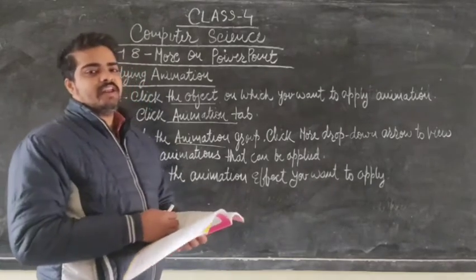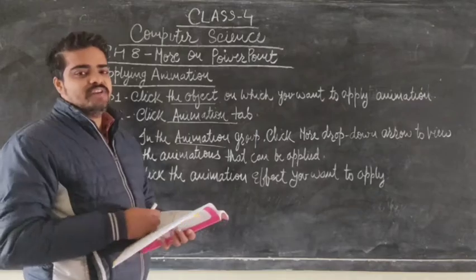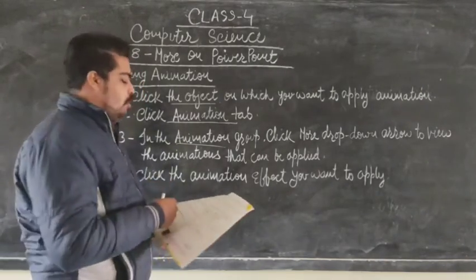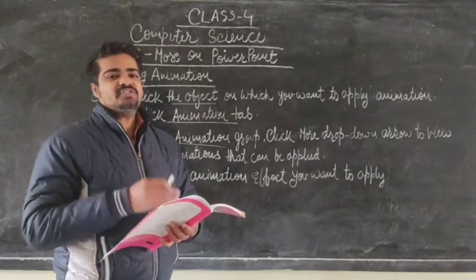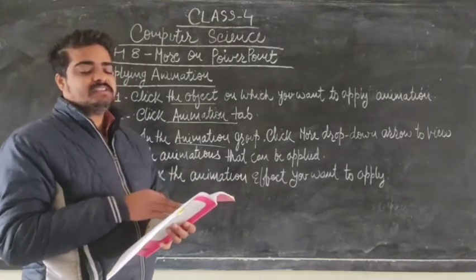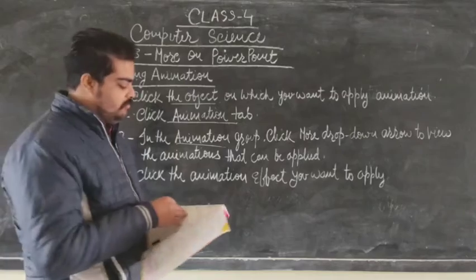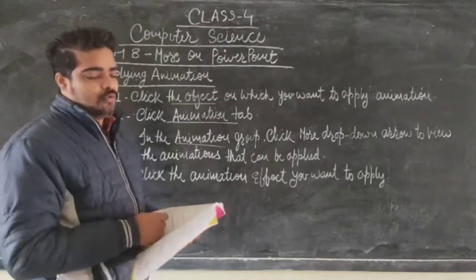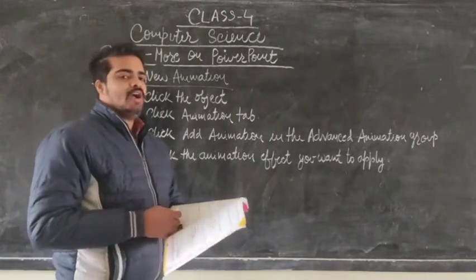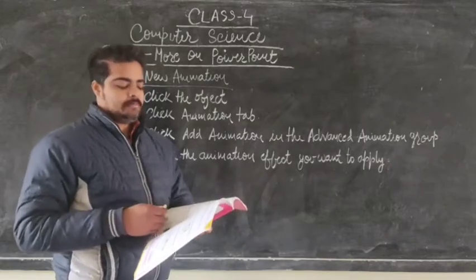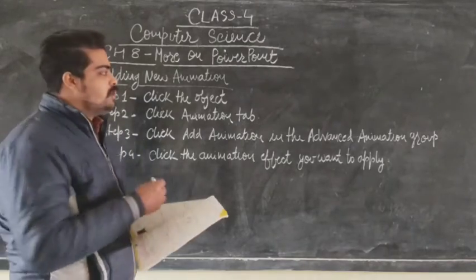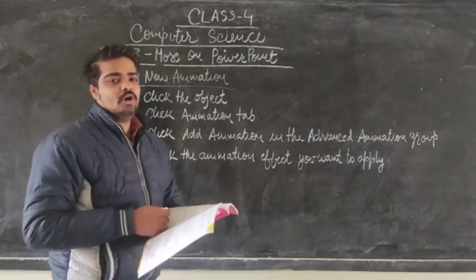In this way we can apply the animation effect to an object on a slide. We can also control the direction in which the object comes into the slide — this can be set using the Effect Options in the animation group. After adding an animation effect, we can also add more than one animation to an object.